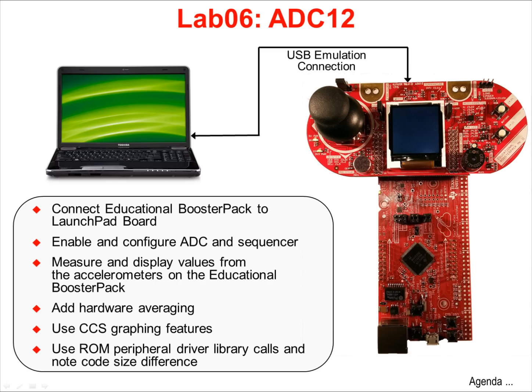In lab 6, we'll enable and configure the ADC and sequencer to measure and display the values from the analog accelerometers on the Educational Booster Pack. Once we see that is working, we'll add hardware averaging to smooth the changing values, and then we'll graph the results in Code Composer Studio. Finally, we'll switch over to using ROM Peripheral Driver Library calls and note the code size difference.